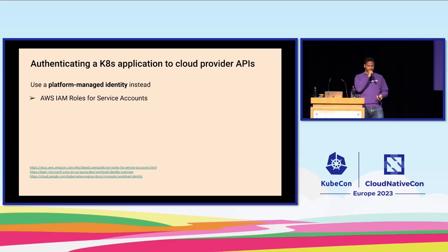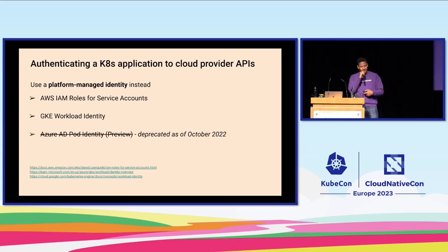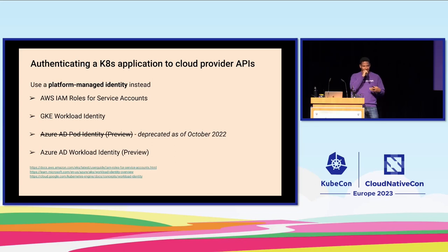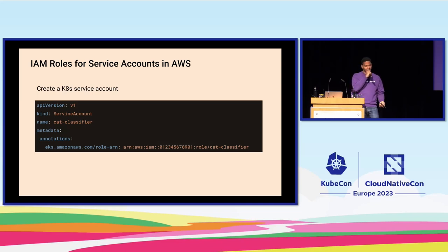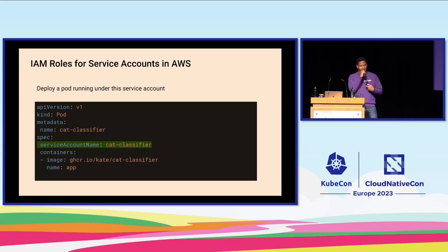Using AWS IAM roles for service accounts: you include this information for the workload in the service account of your pod. You define an annotation specifying the role you want your application to use — in this case the cat-classifier role. Then that service account name is added in the pod spec. This is automatically injected into the file system of the pod, with the right service account and the correct cat-classifier role name.